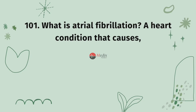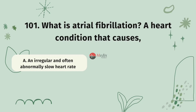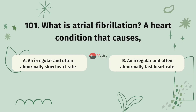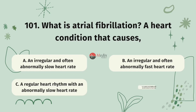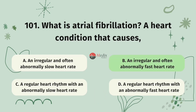Question 101. What is atrial fibrillation? A heart condition that causes: Option A, an irregular and often abnormally slow heart rate. Option B, an irregular and often abnormally fast heart rate. Option C, irregular heart rhythm with an abnormally slow heart rate. Option D, irregular heart rhythm with an abnormally fast heart rate. The correct answer is B.